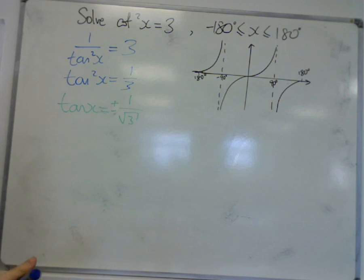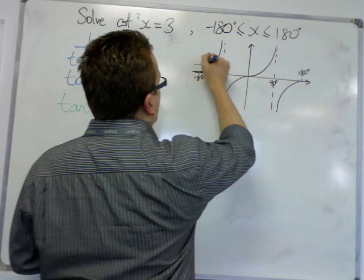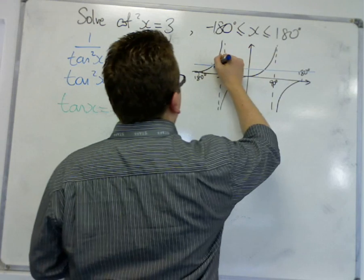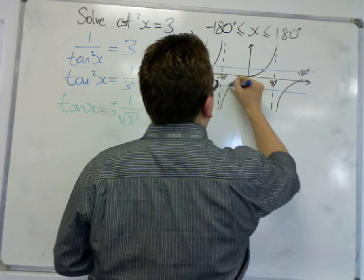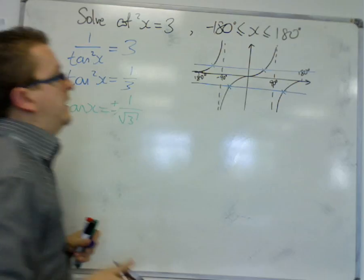So if we're looking at 1 over root 3, we're looking at finding two possible solutions there, and minus 1 over root 3, we'll be getting two solutions there as well.